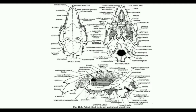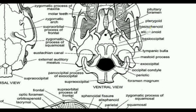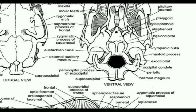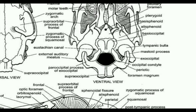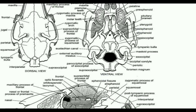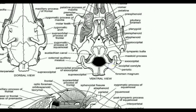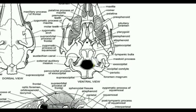This picture shows the skull of rabbit in ventral view. At the posterior end of the skull, you can see an opening called foramen magnum, which is for the passage of the spinal cord.